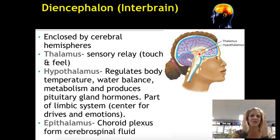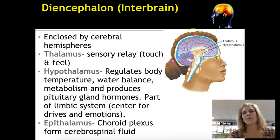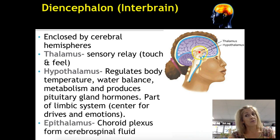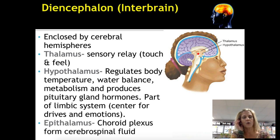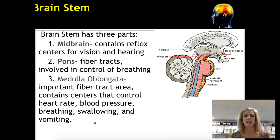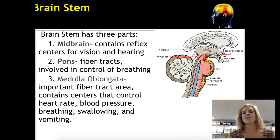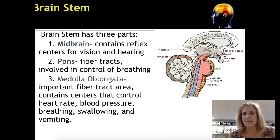The thalamus routes sensory information up through the post-central gyrus, down over the central sulcus, through the pre-central gyrus, and back down the anterior portion. The thalamus puts an emotional quality on sensory input and directs it to the proper location on the parietal lobe. Below the diencephalon and connected to the spinal cord is your brain stem, which has three parts: the midbrain, the pons, and the medulla.